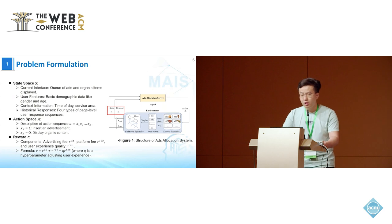We initially modeled the ad allocation as a Markov decision process, which primarily consists of five elements: state, actions, rewards, state transitions, and a discount factor. The state mainly includes the ads and organic items to be displayed, user information, user historical response sequence, and the context.